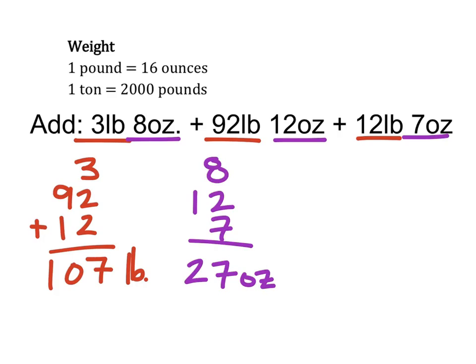to this problem, that would be the final answer. But I see that I have enough ounces to make another pound. So what I'm going to do is I'm going to take off the number of ounces to make 1